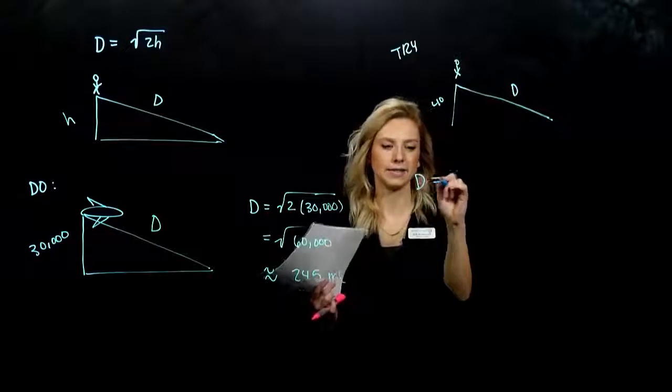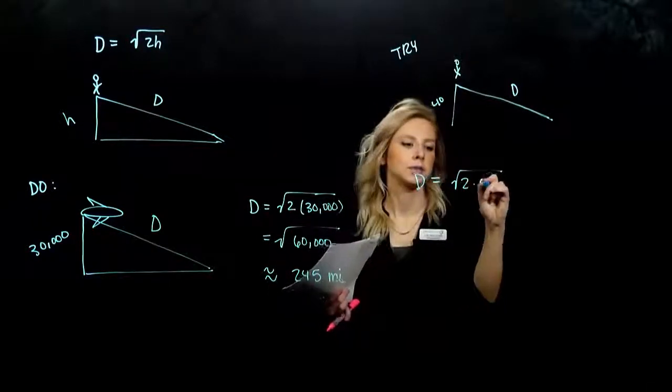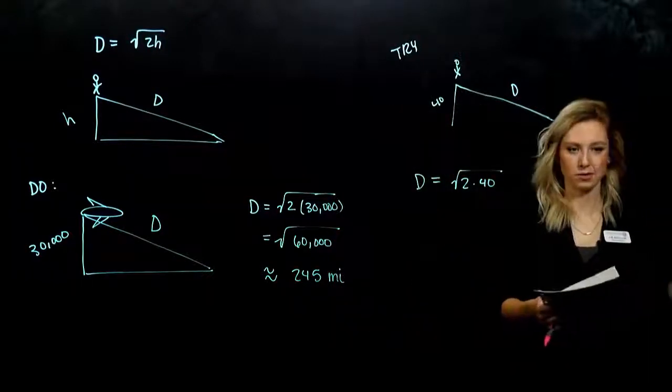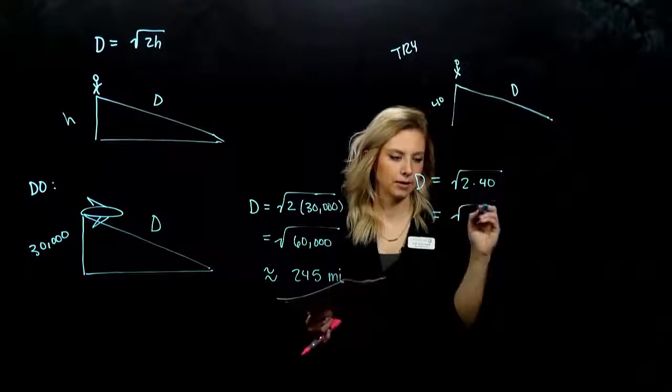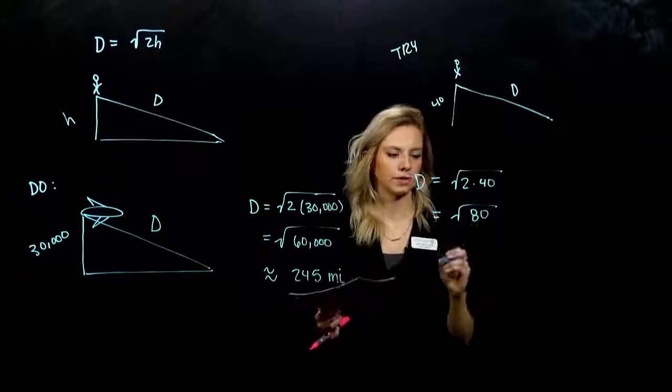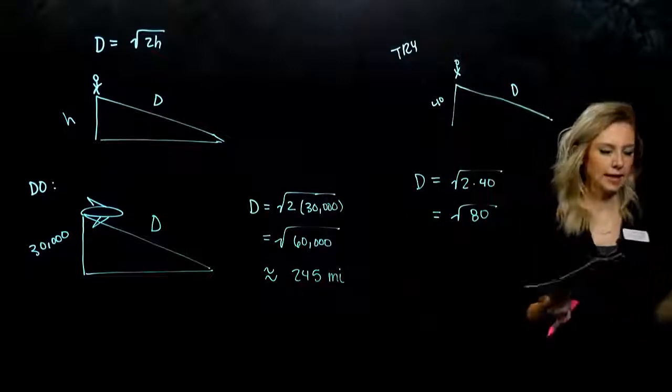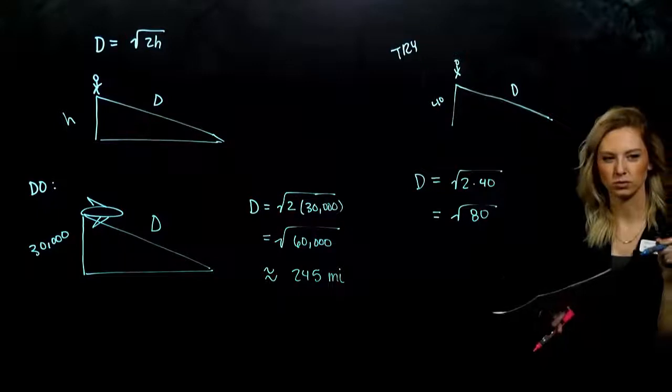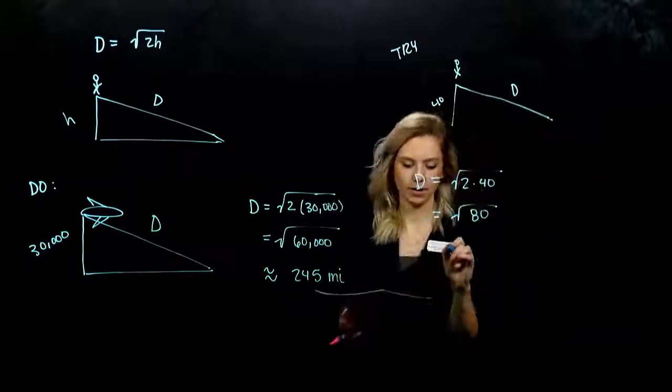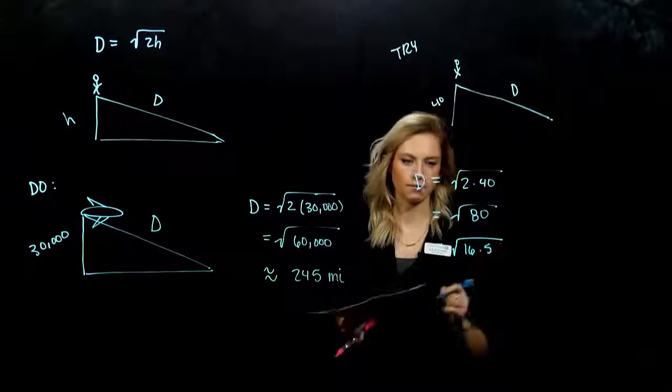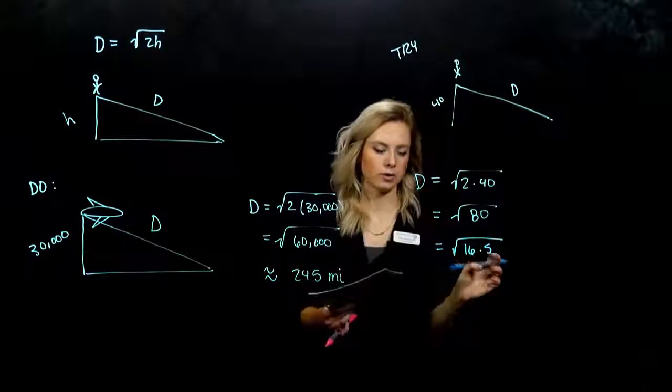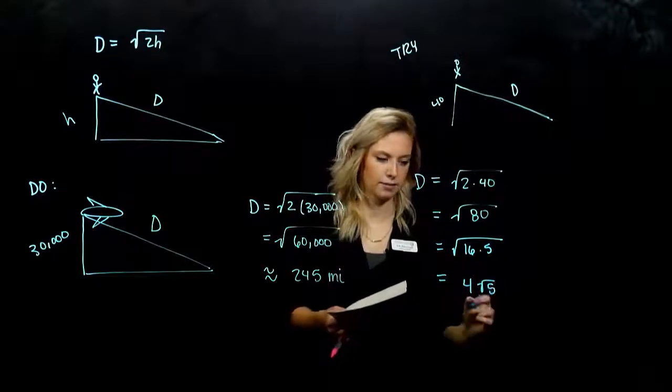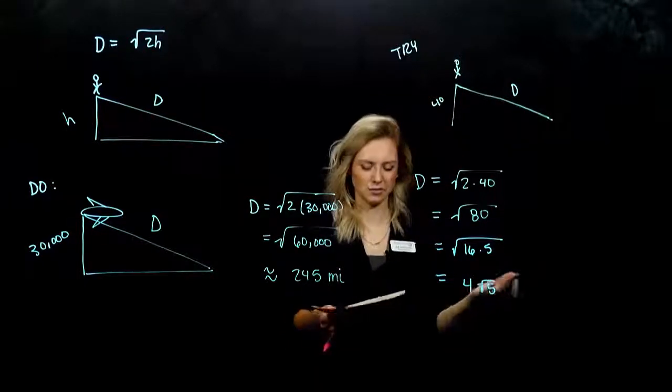So I've got the distance d equals 2 times 40. And there's lots of different ways that we can evaluate this. I'm just going to work by multiplying them together. I've got the square root of 80. And I need to be able to break that into a perfect square and something else. So 80 can be broken into 16 times 5. So it's exactly equal to 4 square root 5 miles.